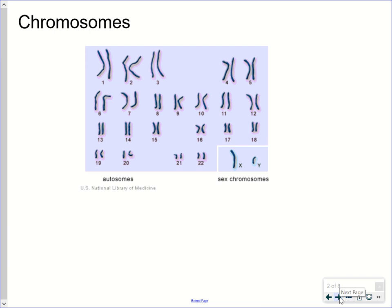Each different organism has a characteristic number of chromosomes. In humans, that number is 46. Our closest living relatives, chimpanzees and bonobos, have 48 chromosomes. This picture visibly shows the chromosomes in a cell that is dividing. These are condensed chromosomes, not in the form of chromatin.